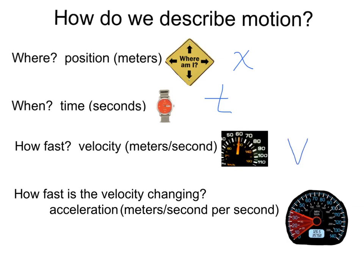The last question is, how fast is the velocity changing? Otherwise, is the object accelerating? How much is the velocity changing in meters per second every second? Here on this speedometer, you can see the velocity was at a certain value and then increased and ultimately increased to about 36 miles per hour. We're going to use meters per second per second, and we'll use the variable a for acceleration.